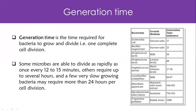The time required for a single bacterial cell to grow or divide is what we call generation time. Bacteria divide by binary fission, and the time it takes for that cell division to happen is the generation time. Different bacteria have different generation times, and that determines how fast an infection happens.